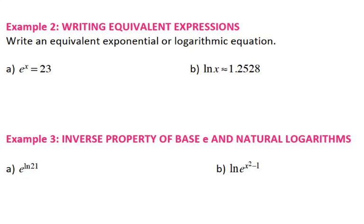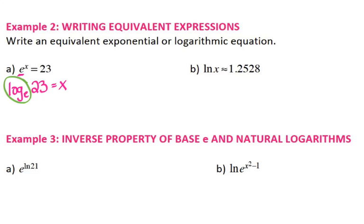For the second example, we're just switching back and forth between exponential and logarithmic form. So if you look at letter a, this is exponential form since it's written with x as an exponent. Your base for the exponential function is the same thing as the base for your log, so this is a log base e of 23. A logarithm is an exponent, so it always has to equal the exponent, which in this case is x. Log base e has a special notation — that's the natural log. So I can write this as the natural log of 23 equals x.